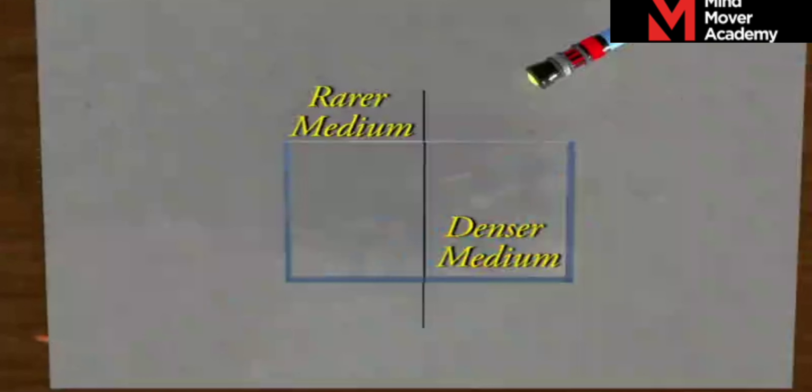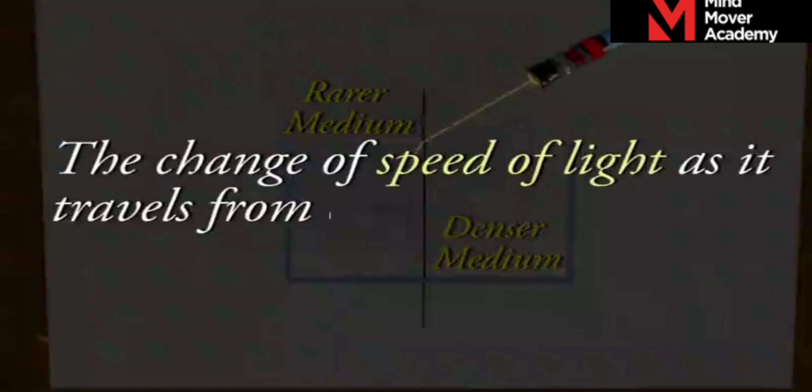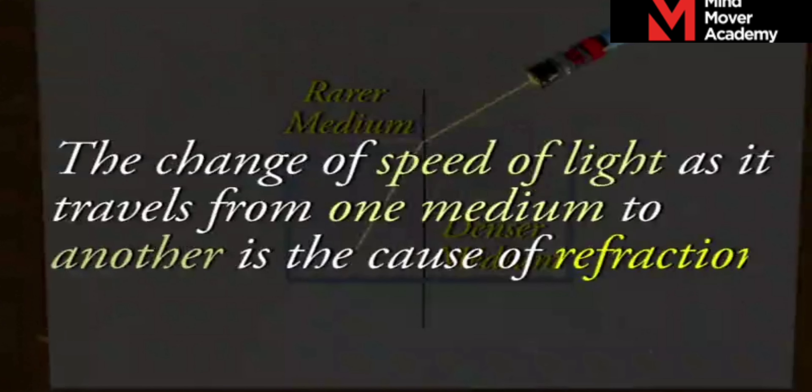It is due to this change in the speed of light that the ray of light bends as it goes from one medium to another. Thus, the change of speed of light as it travels from one medium to another is the cause of refraction.